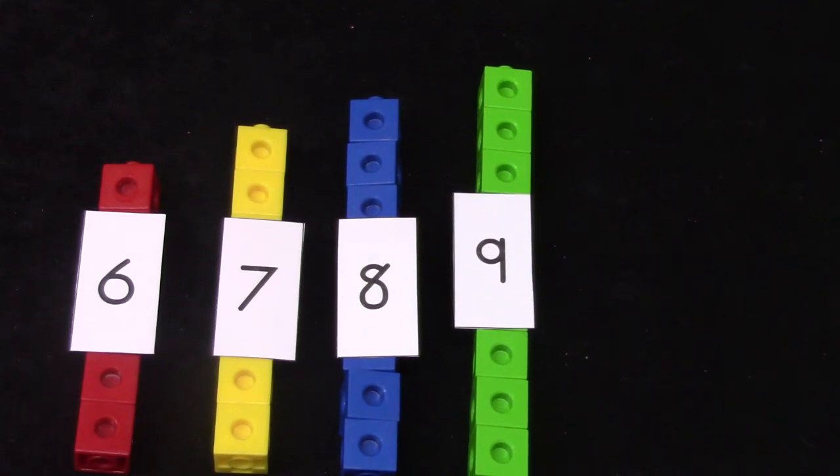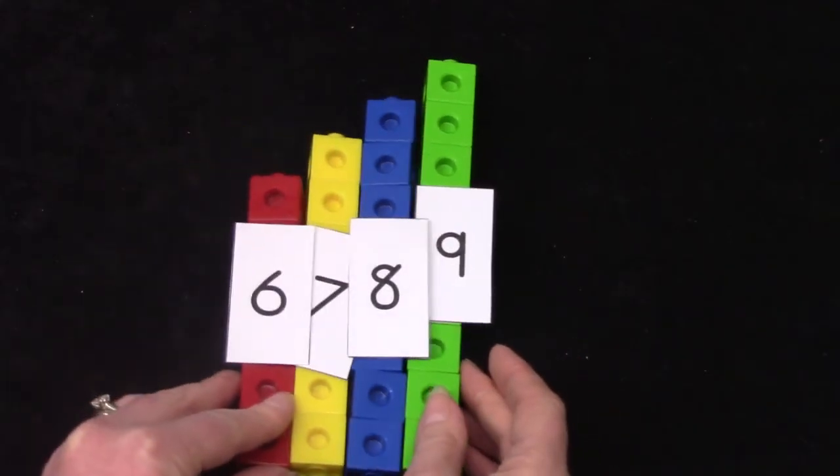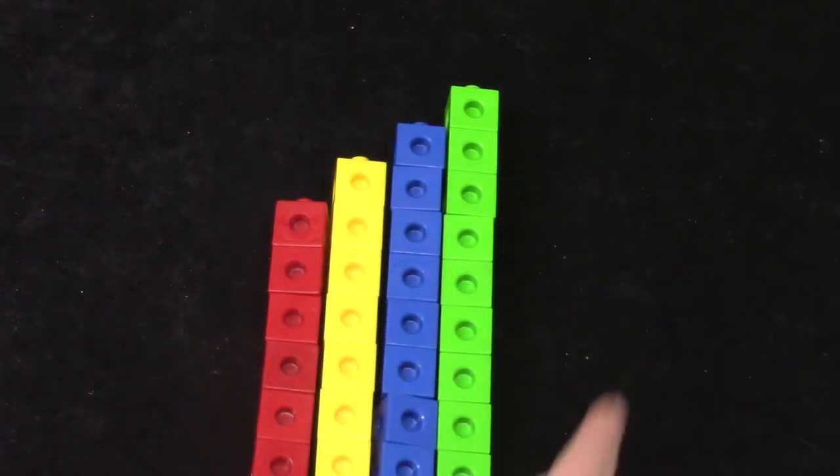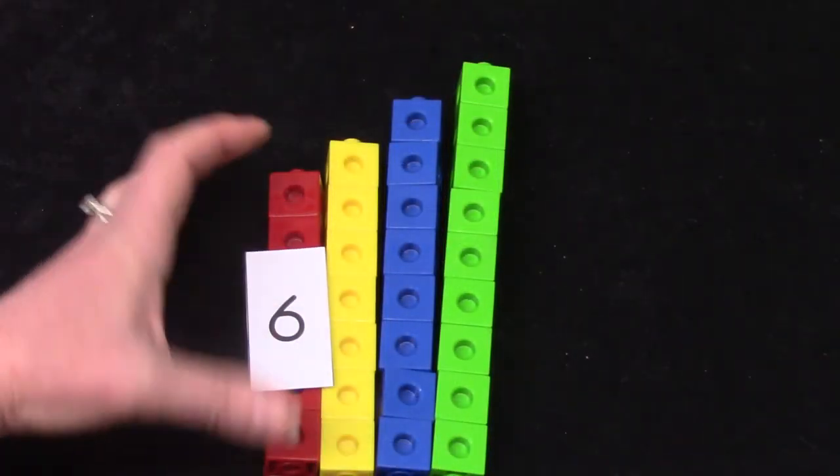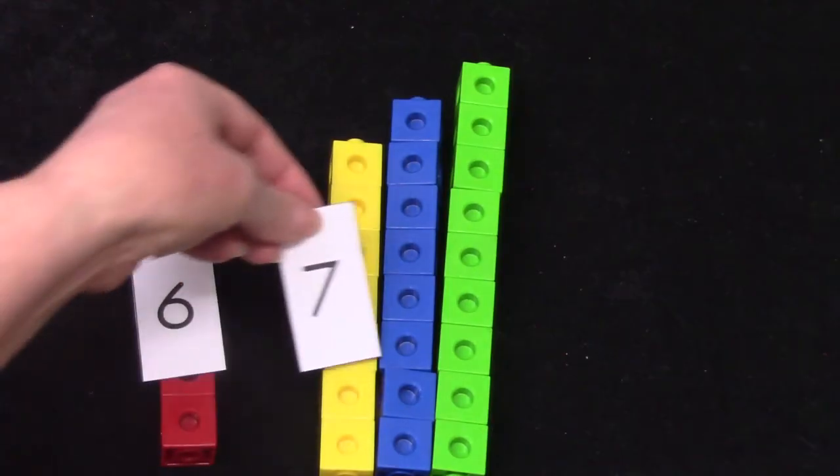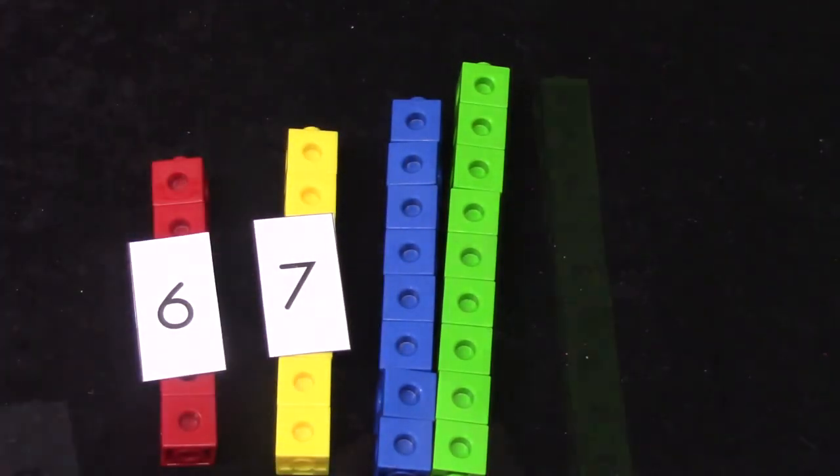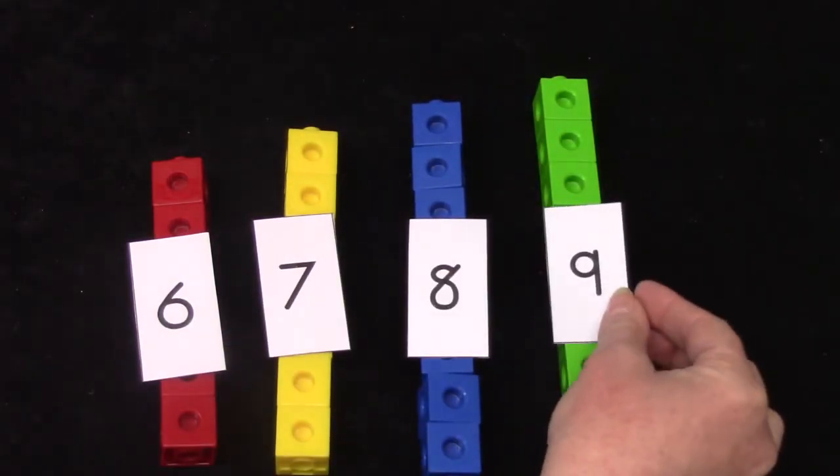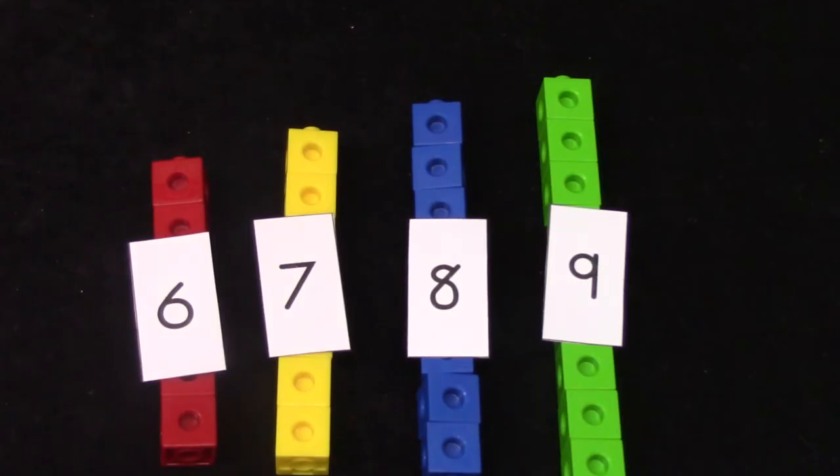Did you notice that these are all kind of in little stair steps? If I put them right beside each other, they would be like little stairs. Six was our fewest. Seven came next. Then we had eight blocks and nine was our most. We have ordered these from the smallest to the largest or from the fewest to the most.